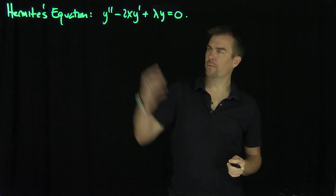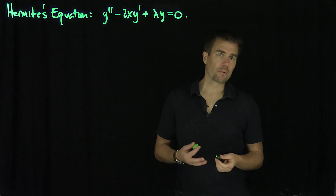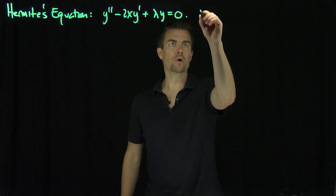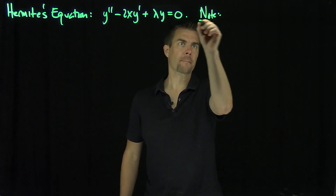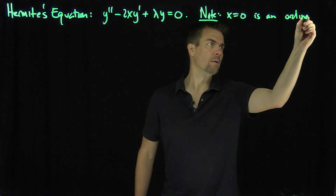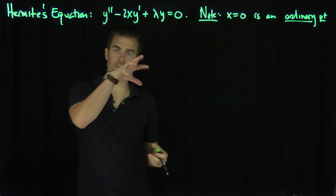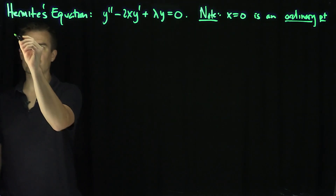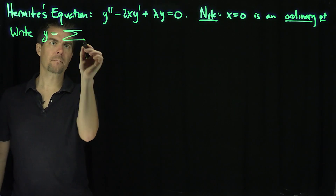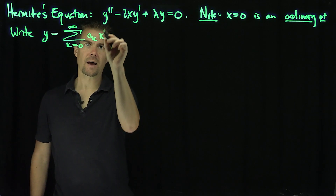Since the coefficient of y double prime is equal to 1, there are no singular points or regular singular points. We can say that x equals 0 is an ordinary point for this second-order linear equation. So I'm going to write down a Taylor series solution centered at the origin: y as the sum from k equals 0 to infinity of a_k x to the k.